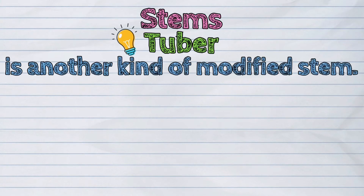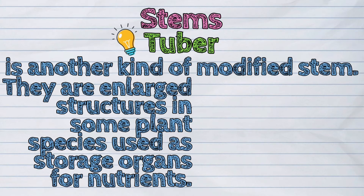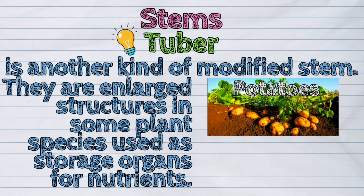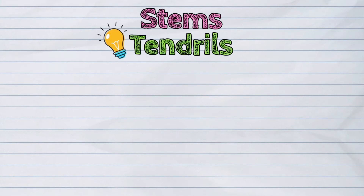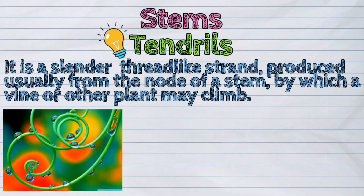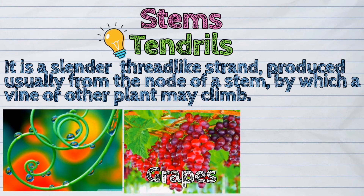A tuber is another kind of modified stem. They are enlarged structures in some plant species used as storage organs for nutrients. Common plant species with stem tubers include potatoes and yams. Another modified stem are tendrils — a slender, thread-like strand produced from the node of a stem by which a vine or other plant may climb. Examples are grapes and bitter gourds.